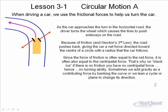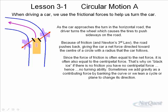On black ice, when you turn the wheels, the tires want to push on the road, but the friction between tires and road is nearly zero. The tires can't grip the ice, so no force exists between tires and road. Since the tires don't push on the ice, the ice doesn't push back — there is no centripetal force. As a result, your car keeps going straight and you end up in the ditch.